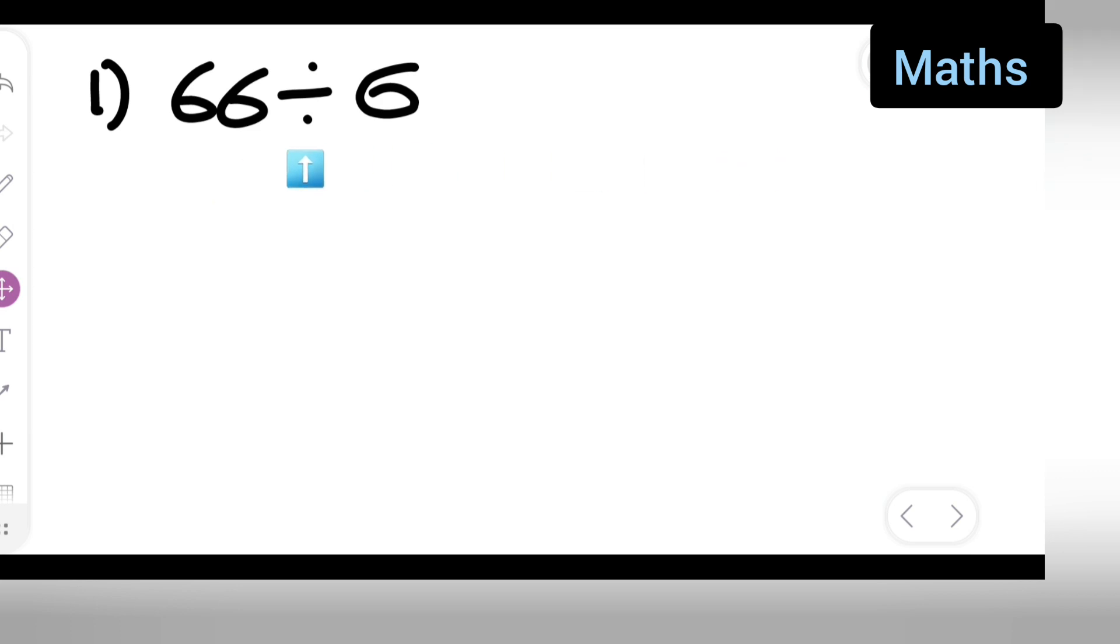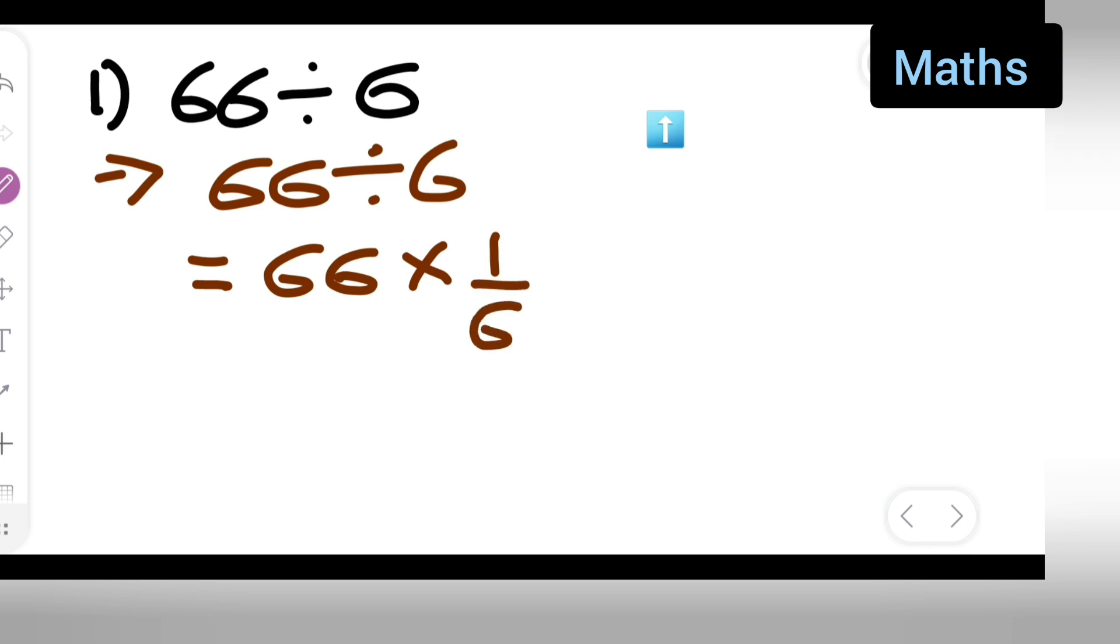First, you need to write 66 divided by 6. I'm going to go in stepwise order. So this is equal to 66 multiplied by the reciprocal of 6. The reciprocal of 6 is nothing but 1 upon 6. Reciprocal means the inverse.